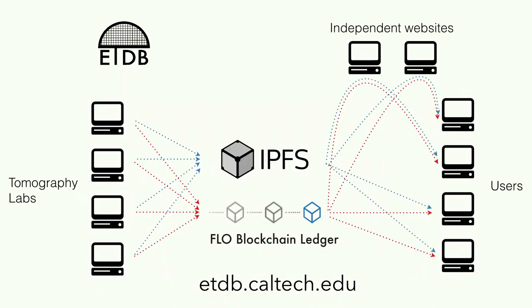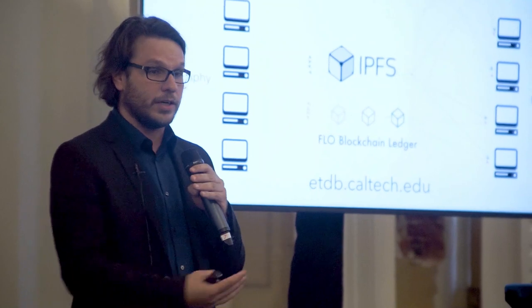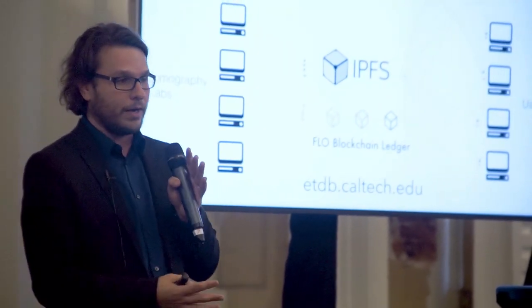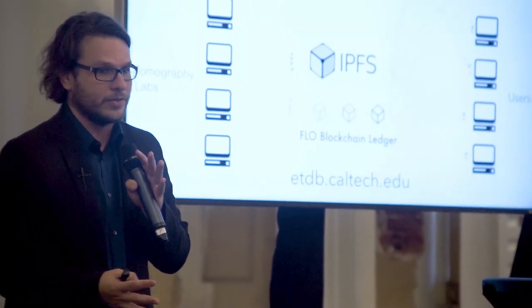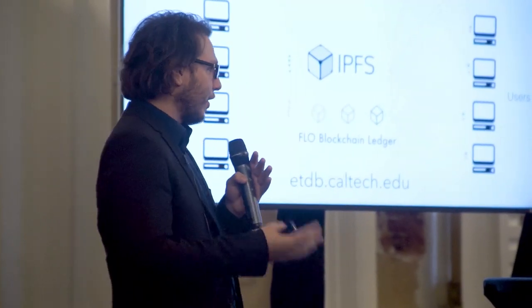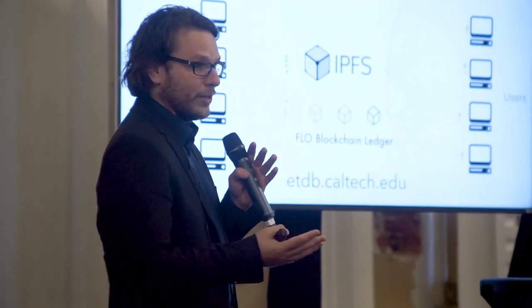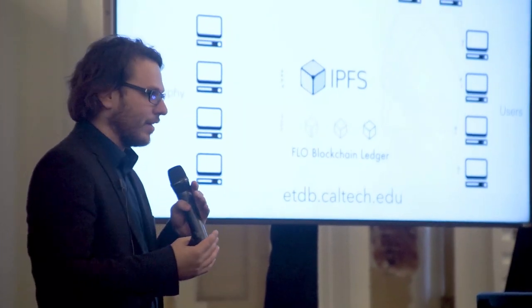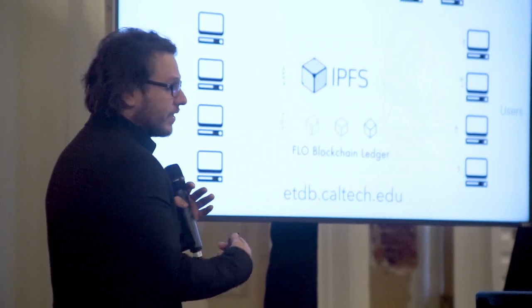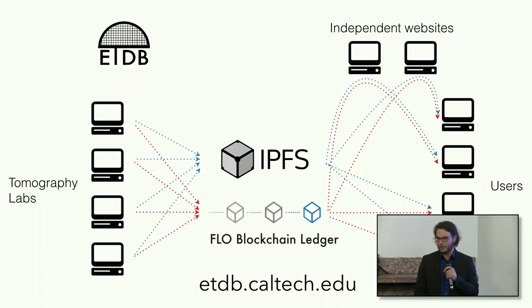We expect this system will empower scientists who can now use this to help their research. These datasets are really expensive — one cryo-electron microscope costs $7 million, so not many places can have one. Below the equator, very few places have them. So this gives them access to 10,000 tomograms that they didn't have before.